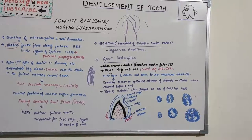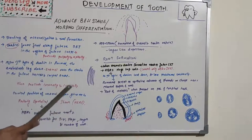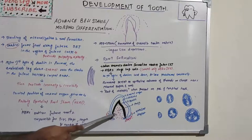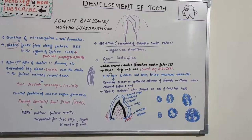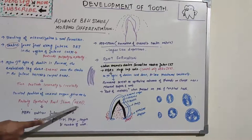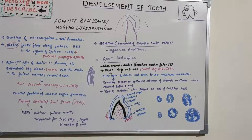Root formation starts once the enamel and dentine formation has reached the future cemento-enamel junction. The enamel organ plays a very important role in root development by forming the structure known as Hertwig's Epithelial Root Sheath (HERS), which models the shape of the root.